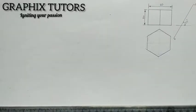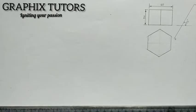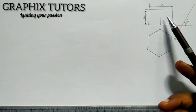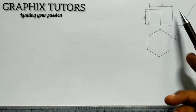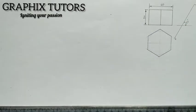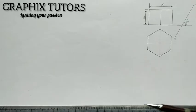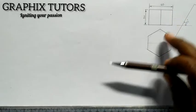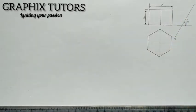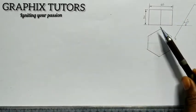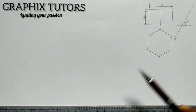Good day everyone, my name is Graphics. Today we will be looking at an aspect of technical drawing called auxiliary projection. We are told to project the elevation of this photographic view here, whereby this is a plan and its elevation. We are told to draw the auxiliary plan of this view. The first thing to do is to start drawing from the plan; it is easier to start from the head.